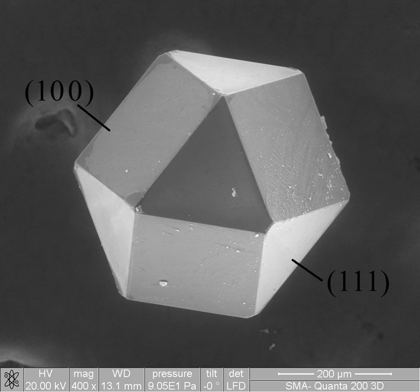Microstructure is defined as the structure of a prepared surface or thin foil of material as revealed by a microscope above 25× magnification. It deals with objects from 100 nm to a few cm. The microstructure of a material, which can be broadly classified into metallic, polymeric, ceramic, and composite, can strongly influence physical properties such as strength, toughness, ductility, hardness, corrosion resistance, high/low temperature behavior, wear resistance, and so on. Most of the traditional materials such as metals and ceramics are microstructured.